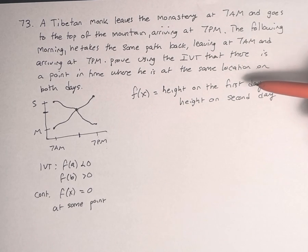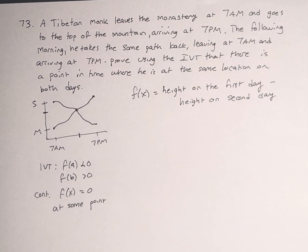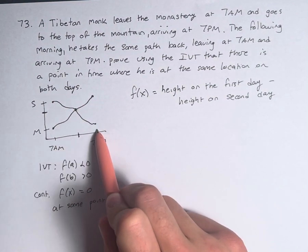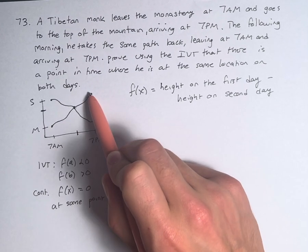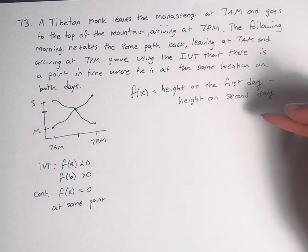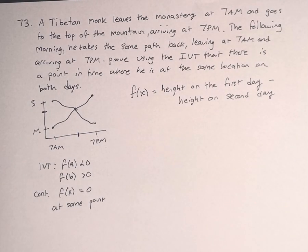Is this function continuous? Well, his location on the mountain is continuous because he has to go the whole way. He's not being picked up by a helicopter and dropped off an hour later. He's walking continuously all the way up the mountain and all the way down the mountain. Therefore, these individual paths, and therefore a combination of them, in this case being subtracted, is a continuous function, and we can use the Intermediate Value Theorem.